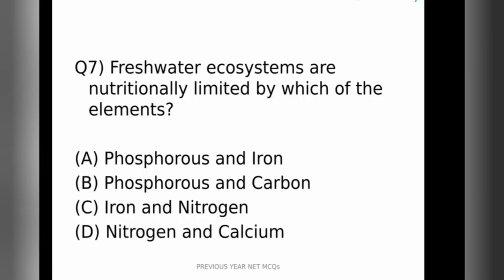Moving on to the seventh question. Fresh water ecosystems are nutritionally limited by which of the following elements? Option A Phosphorus and Iron, B Phosphorus and Carbon, C Iron and Nitrogen, D Nitrogen and Calcium. So here in this question it is asked, in fresh water ecosystem which of the elements are present in limited quantity.